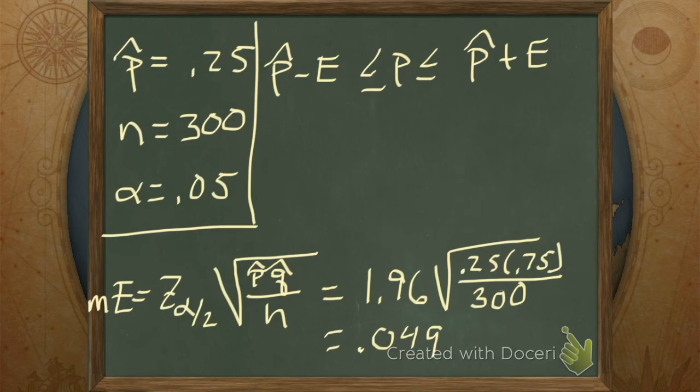Okay, so we're going to take our 0.25 and we're going to subtract off 0.049, and then we're going to do that same thing, 0.25, and add 0.049.